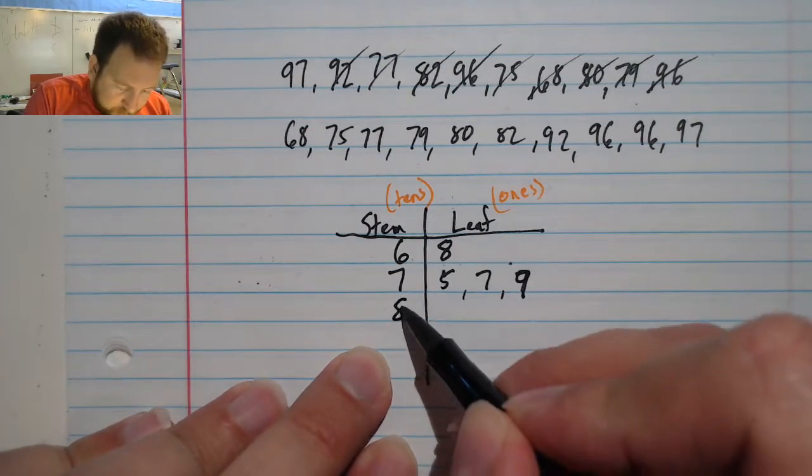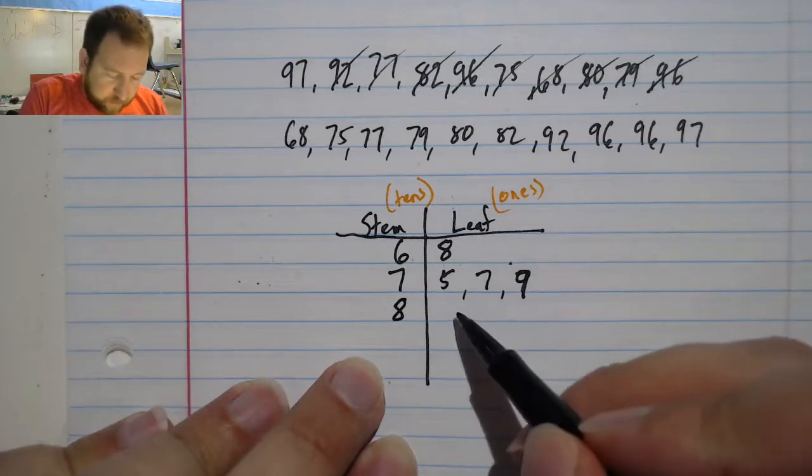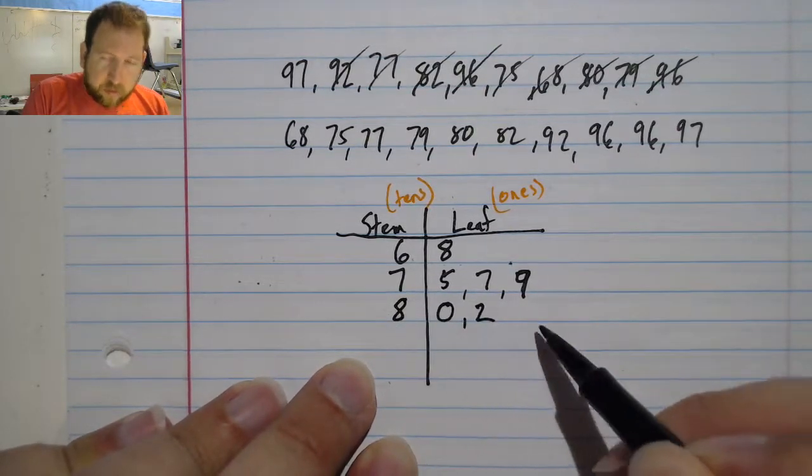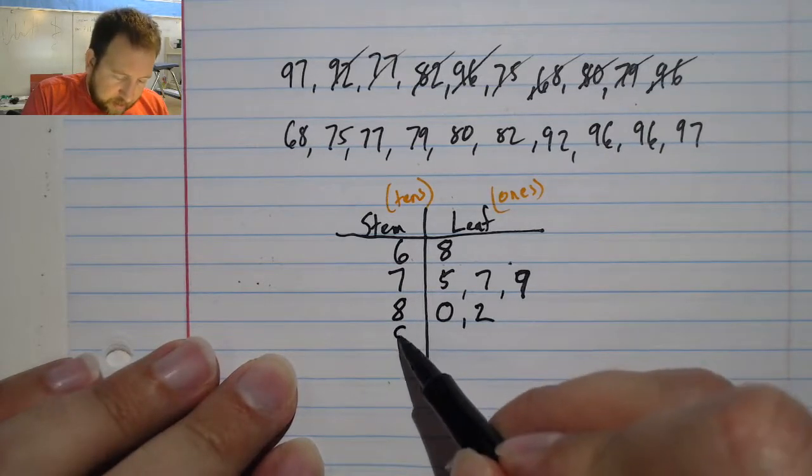We'll do the same with the 80s. I have an 80 and an 82, 80 and an 82. So I have two terms here. And then I also have my 90s.